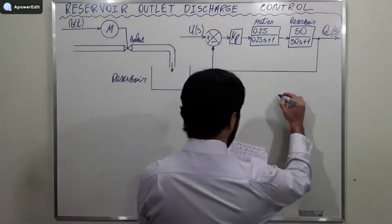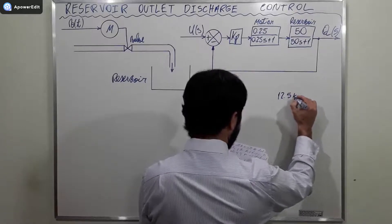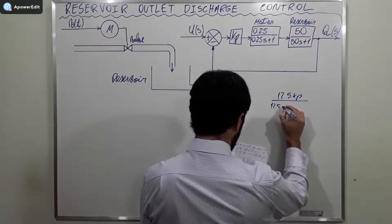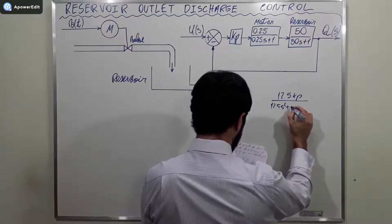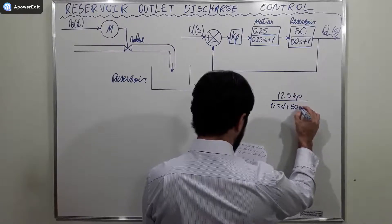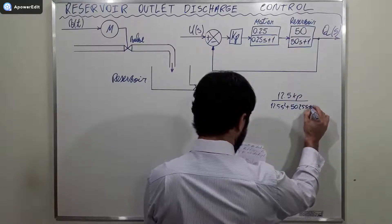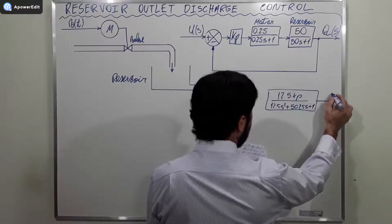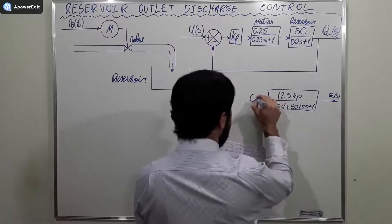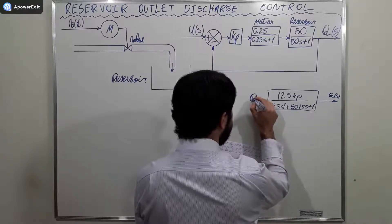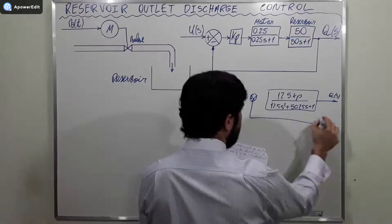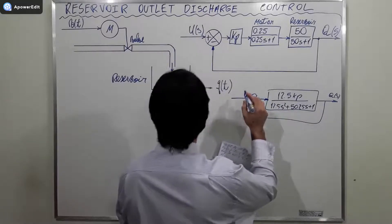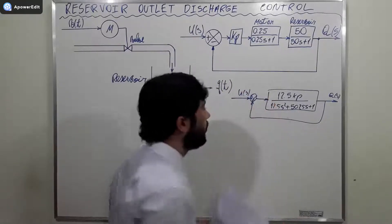The new block diagram will have 12.5Kp divided by (12.5S² + 50.255S + 1) as the forward path, with Q(S) as the output, the error signal, the feedback loop, and U(S) as the input.